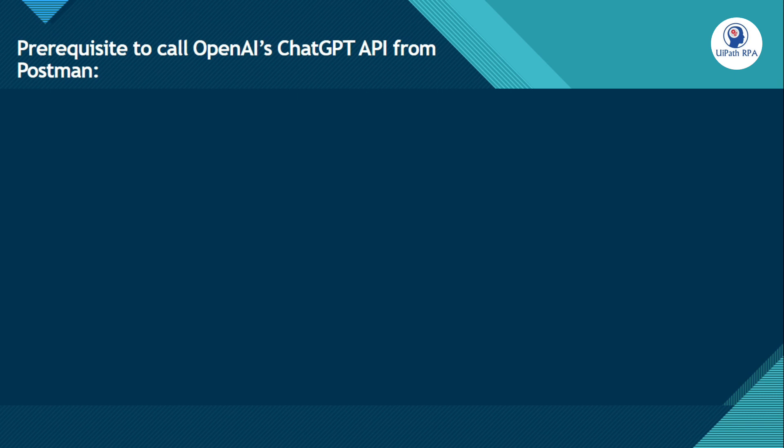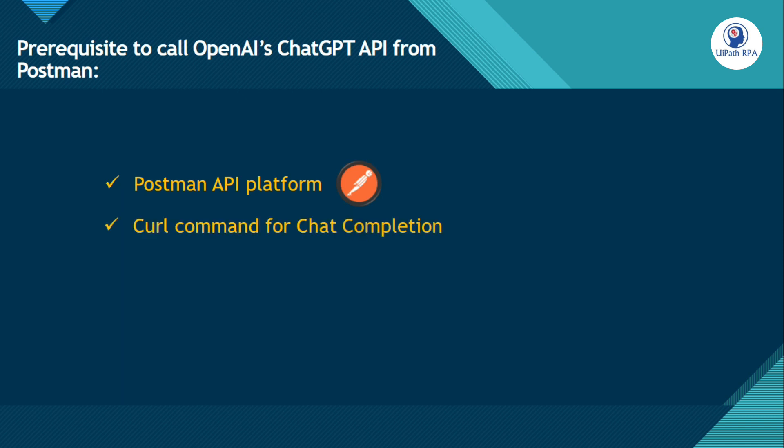Let me show you the prerequisites to call OpenAI's ChatGPT API from Postman. First, we should have a Postman API platform logged in. Second, the curl command for the chat completion for which you are going to make a request. Third, we need an OpenAI API key. I am going to help you log in to Postman, find the curl command, and then get the OpenAI API key. Let me do it one by one.